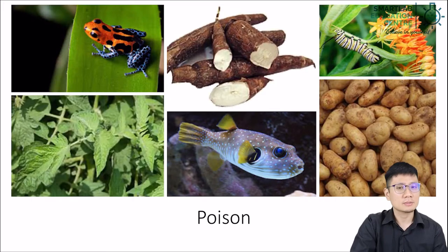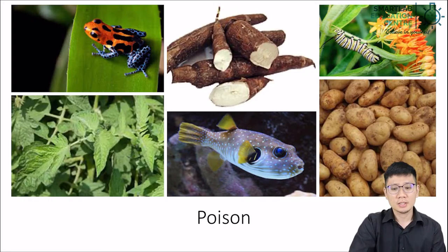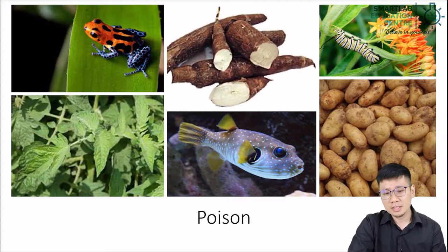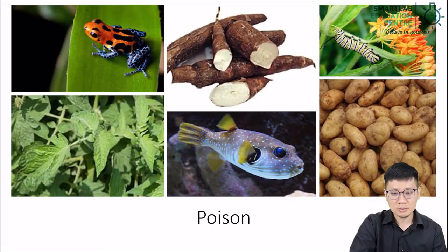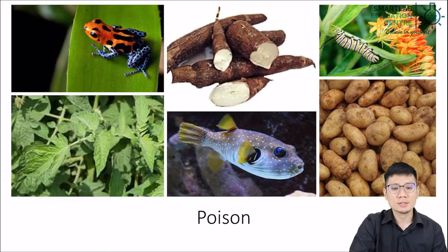Let's sidetrack a little and talk about plants. Most plants do develop poisons. Some of them might surprise you — for example, a common potato actually produces a type of poison called solanine, and if you eat the green parts of a potato after it has started sprouting, you can actually get poisoned by it. There are many parts of plants that produce poison that we may not know of because we don't usually come in contact with them.